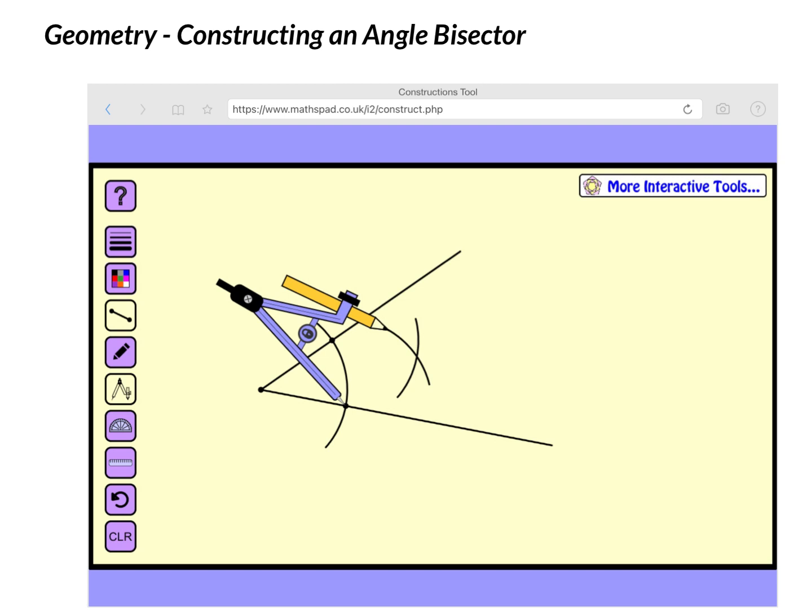Now, I'm going to just move this out of my way. And I am going to draw a segment from the original vertex to the intersection point. And that has bisected my angle.